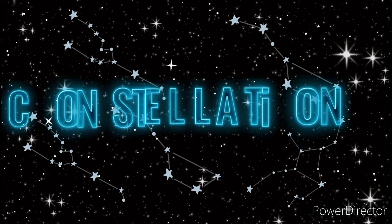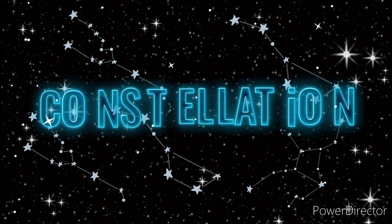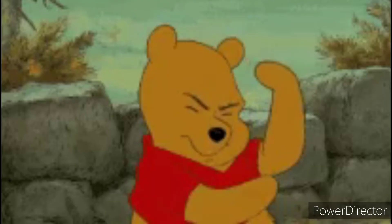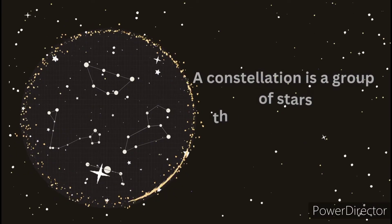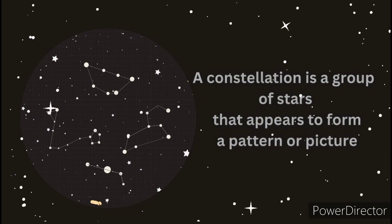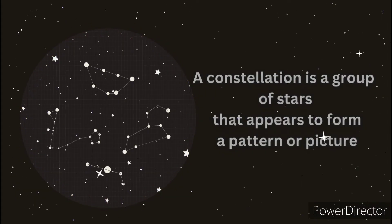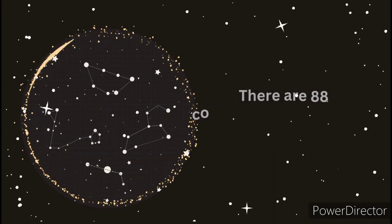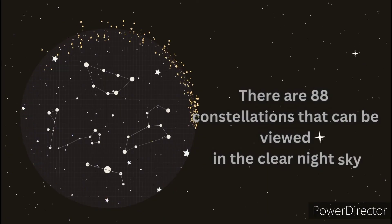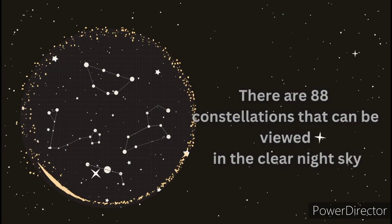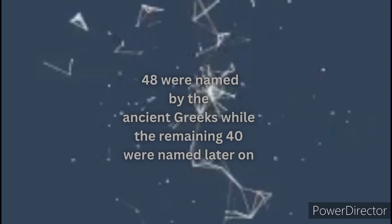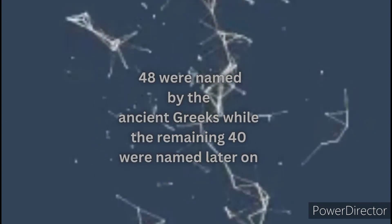Have you seen a group of stars? Do you see images of animals, humans, or objects? If your answer is yes, you're already familiar with the constellation. But what is a constellation and how do constellations form? Well, they don't form in the sense that we normally think of things forming. Instead, they are a product of our imagination. A constellation is a group of stars that appears to form a pattern or picture. Based on studies, there are 88 constellations that can be viewed in the clear night sky. 48 were named by the ancient Greeks, while the remaining 40 were named later on.